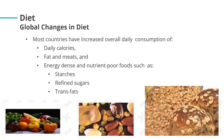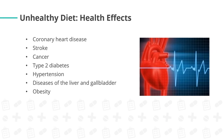The next risk factor is diet. For global changes in diet, most countries have increased overall daily consumption of calories, fat and meats, and energy-dense and nutrient-poor foods such as starches found in bread, rice, and pasta, refined sugars in sugary beverages, drinks, pastries, cakes, and trans fats found in fried foods. The health effects of an unhealthy diet are coronary heart disease, stroke, cancer, type 2 diabetes, hypertension, diseases of the liver and gallbladder, and obesity.